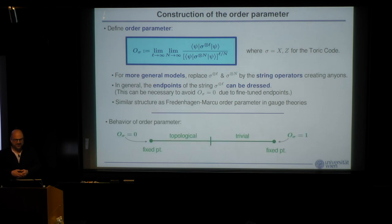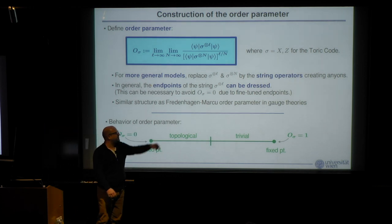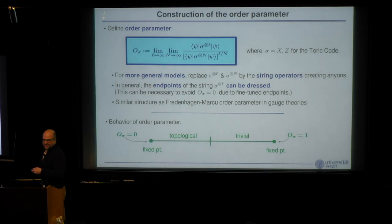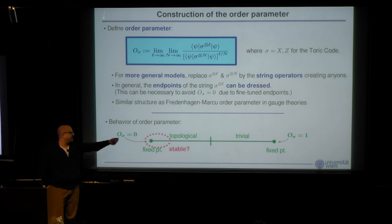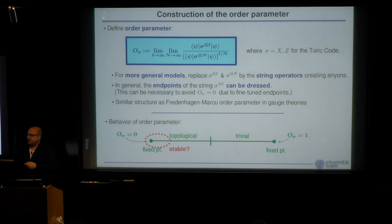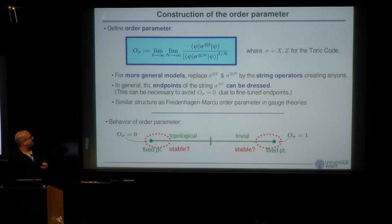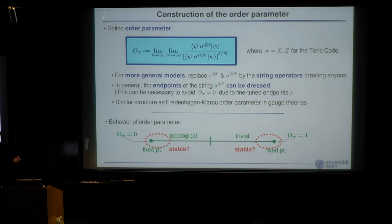So what do we know about this order parameter so far? It is zero at the fixed point in the topological phase and one at the fixed point in the trivial phase. We don't yet know what it does in between. The hope is that it is stably zero in some neighborhood of the topological phase, and stably one in some neighborhood of the trivial phase — and that's what I'm going to discuss.